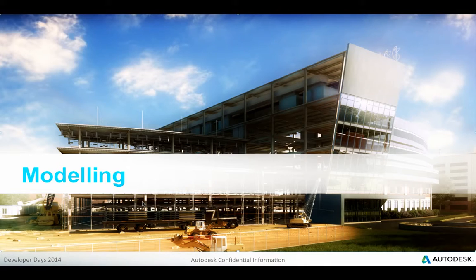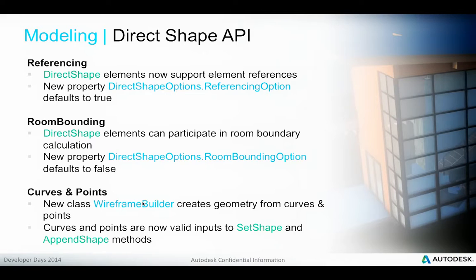The next area is modeling — providing more access to Revit elements, their data, creation of elements, and the geometry API. The Direct Shape API was introduced in Revit 2015, with a strong reason being to enable better interaction with IFC files and provide the ability to define elements and geometry directly within the project file, without having to create a dedicated family definition for each geometric instance. This Direct Shape functionality has been enhanced significantly in Revit 2016, adding support for referencing, room bounding, and curves and points.